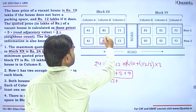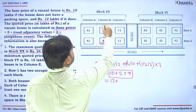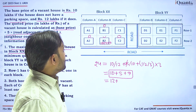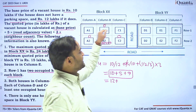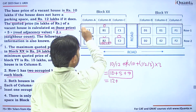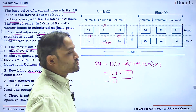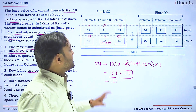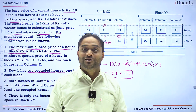So B2 is vacant with a quoted price of 24 lakhs, and its neighbor count of 3 means A2, C2, and B1 must all be occupied. Additionally, Row 1 has 2 occupied houses — one in each block. In Block XX, out of A1, B1, and C1, exactly one must be occupied. Since B1 is already confirmed occupied, A1 and C1 must be vacant.